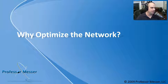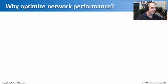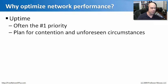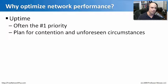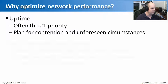A great place to start is with why we would go through this, in some cases very arduous process of optimizing the network. One very common reason is that if you build a network that works well, it's probably going to stay up longer. Making sure that your customers can get to network resources is your number one priority. If you build a network that is resilient, redundant, and well designed, you're going to avoid a lot of unforeseen circumstances.